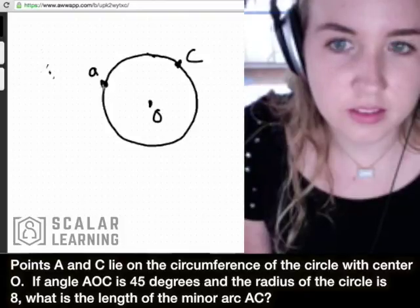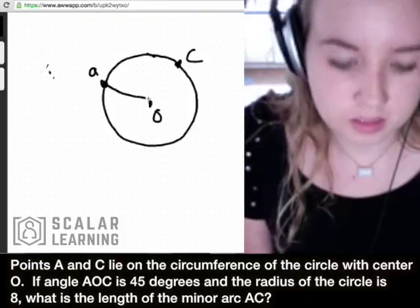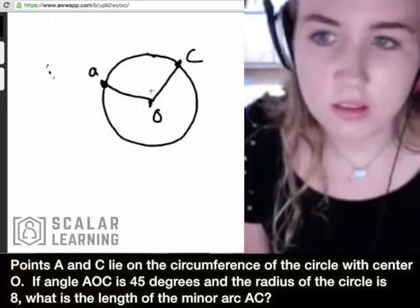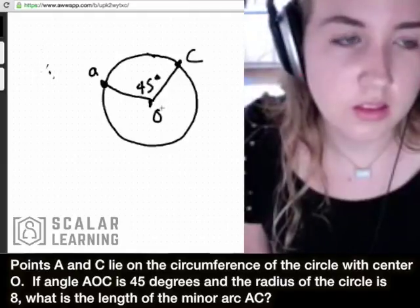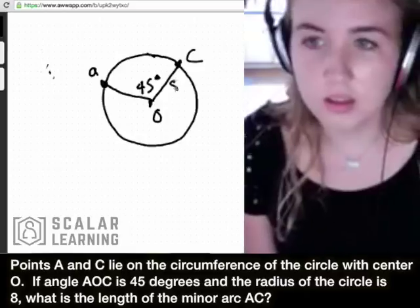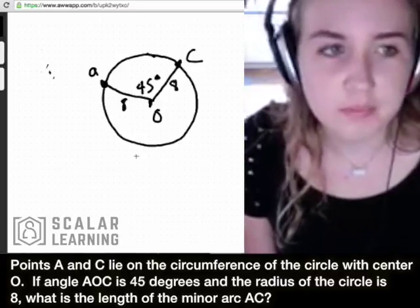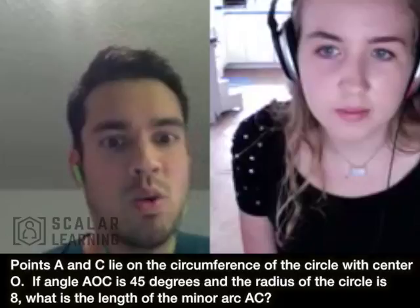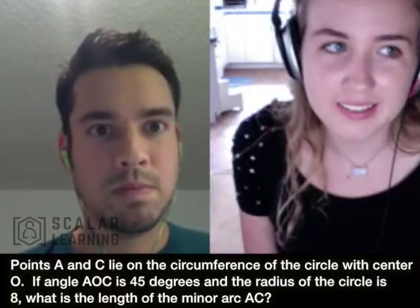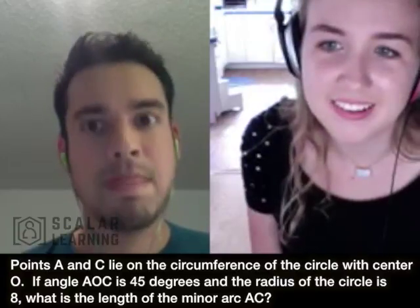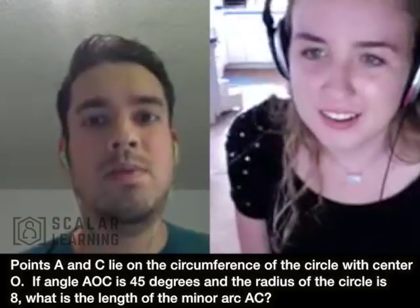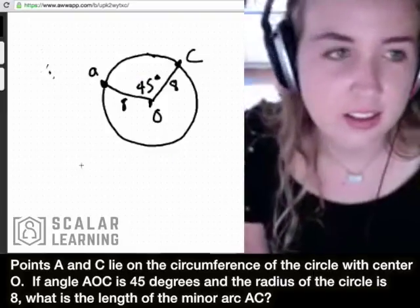Okay, and we've got AOC—that's this angle. All right, AOC is 45 degrees. Here we go. And the radius of the circle is eight, so I'll just put these little lengths in here. Okay, you don't have to do it exactly like this; this is just my way. So what is the length of... Do you know what it means when it says minor arc? Like part of the circle? An angle?